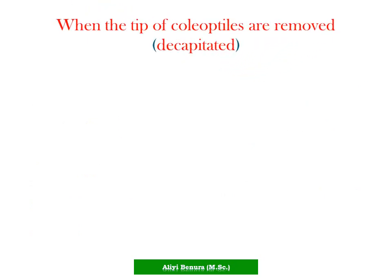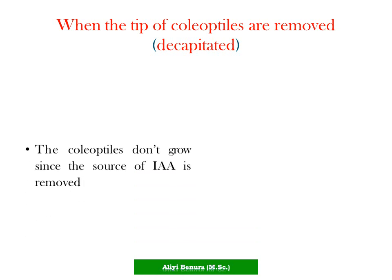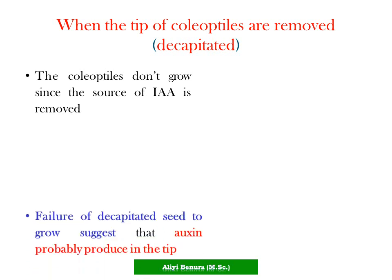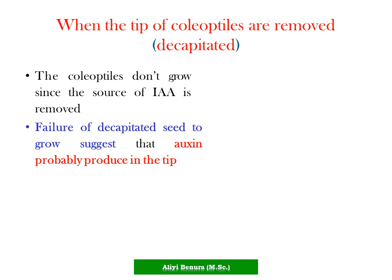When the tip of coleoptiles is removed or decapitated, the coleoptiles do not grow since the source of auxin, indole-3-acetic acid, is removed. The failure of decapitated coleoptiles to grow suggests that auxin is probably produced in the tip.